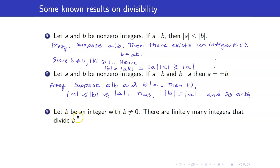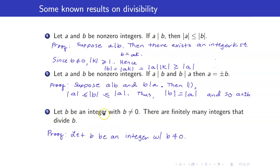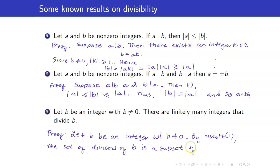Number 3: if we have a non-zero integer, there are only finitely many integers that divide it — meaning there are only finitely many divisors of a given integer. For the proof, we start with the premise that b is an integer not equal to 0. By result 1, the set of all divisors of b is a subset of the set from −|b| to |b|. This set is finite, and therefore its subset will also be finite.